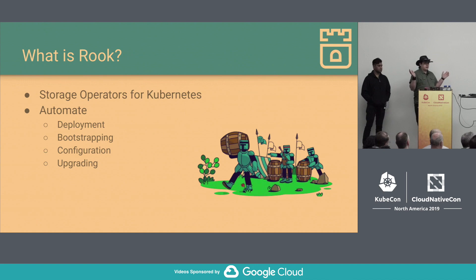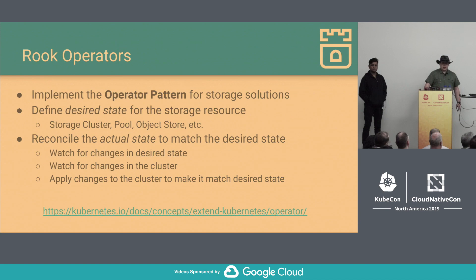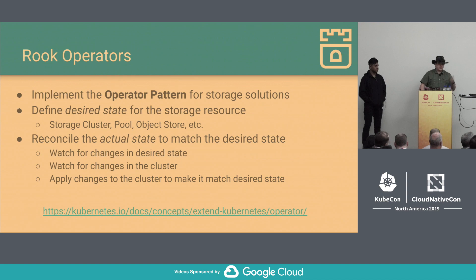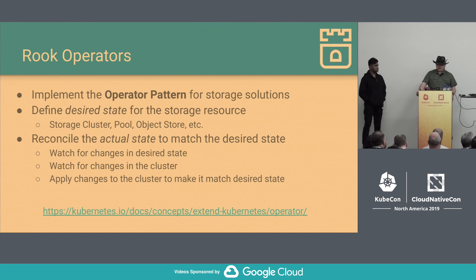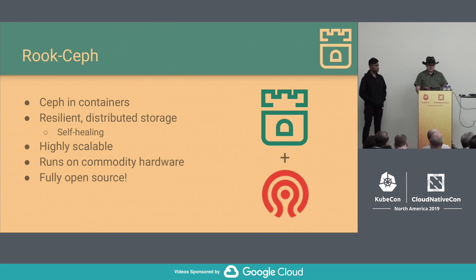Now Rook and Rook-Ceph. What is Rook? Rook is storage operators for Kubernetes. It helps you automate various aspects of maintaining your data plane, from deployment to bootstrapping, configuration, and upgrade. Rook is a collection of operators — pieces of software that implement the operator pattern for storage solutions like Rook-Ceph, EdgeFS, and Minio. The operator pattern allows you to define a desired state for any given resource or CRD, and the operator works to reconcile the actual state of the cluster to match that desired state. It watches for changes in the cluster and applies changes to make the actual state match the desired state.